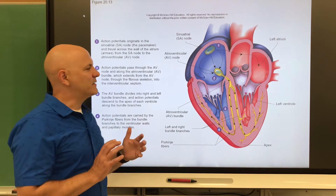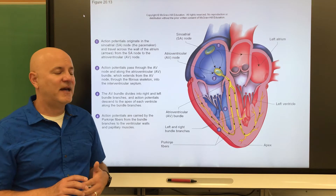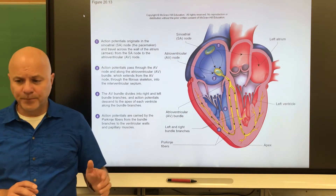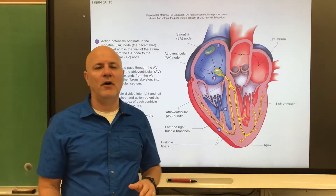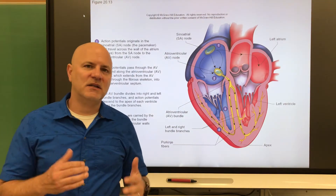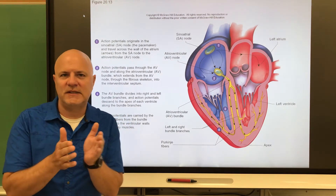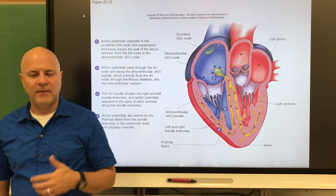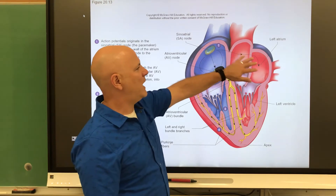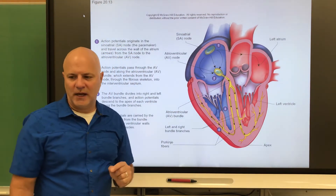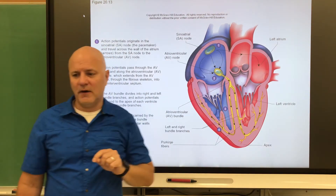The next node is the atrioventricular node, or AV node. It is also auto-rhythmic and can take over as a pacemaker if the SA node fails, though it is not an ideal pacemaker. The fibers in the internodal pathway and AV node are smaller in diameter, which slows the impulse down — like a four-lane highway narrowing to two lanes. This delay ensures the atria and ventricles don't contract simultaneously, allowing blood to move from atria into ventricles first.